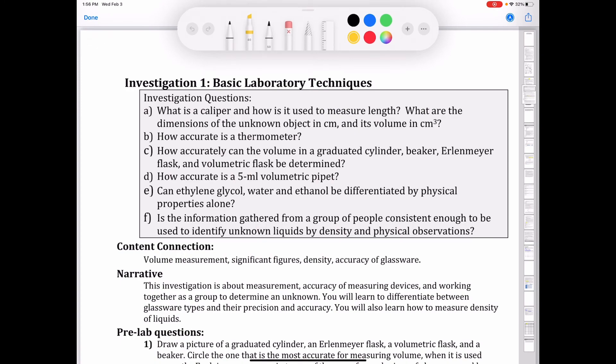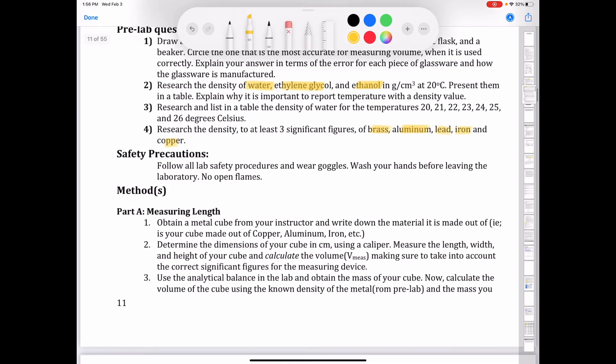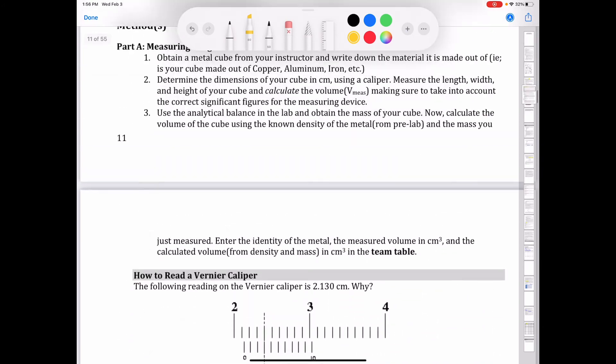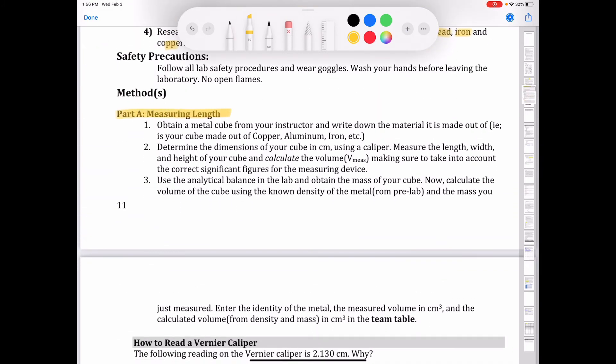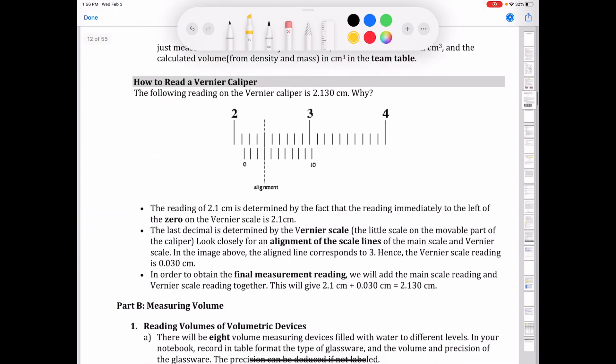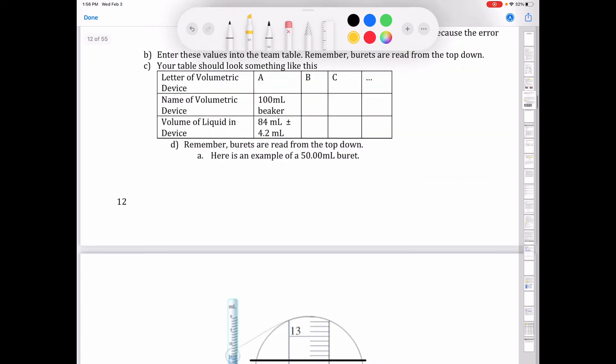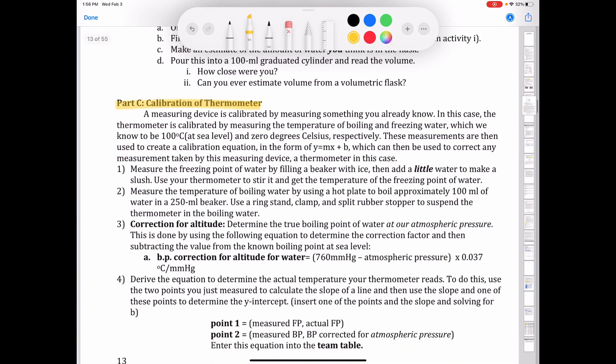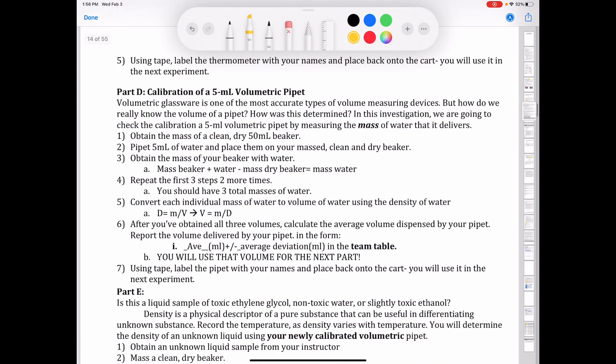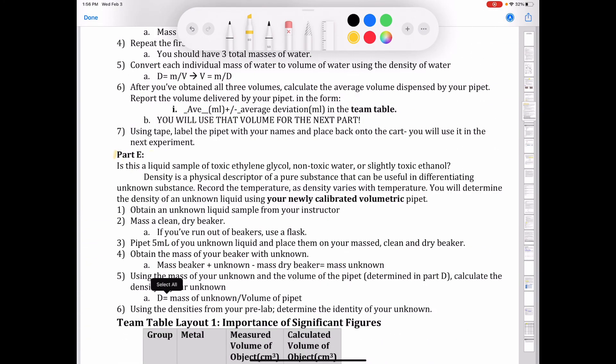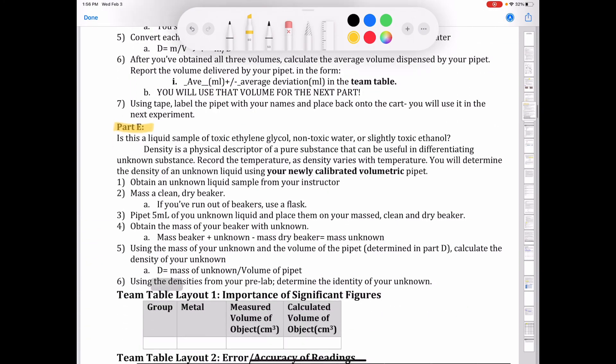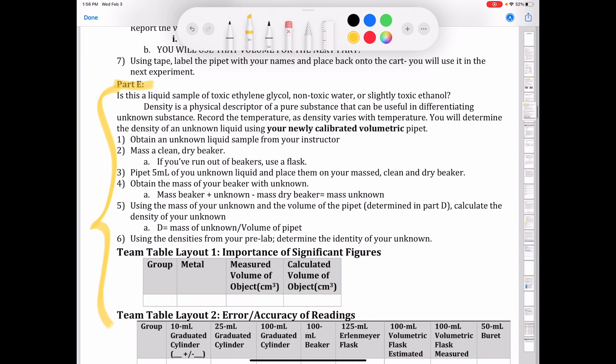So again, if we go back to lab one, basic laboratory techniques, and we go down to part A right here, you're going to write out the procedure for part A. Then you're going to write out the procedure for part B. Then you will write the procedure for part C. Then you will write the procedure for part D. Then you will write the procedure for part E. Again, you don't have to write all of this out verbatim. You can write it out in your own words. It just has to be enough information so that you are able to follow it. And if somebody else was to pick up your lab notebook, they would be able to follow it as well.